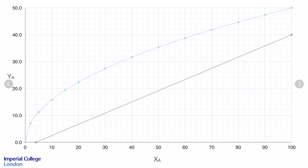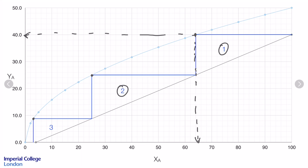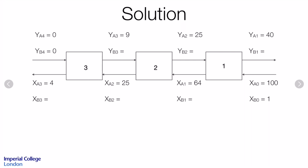We're told there are three equilibrium stages, so we start at the top of our operating line and draw in our three equilibrium stages — that should finish just at the end of the operating line, which is fairly close. Using these intermediate concentrations, we can calculate the equilibrium concentration in the aqueous phase and the equilibrium concentration in the solvent phase leaving stage 1, and likewise for stages 2 and 3, and we can now put those onto our diagram.